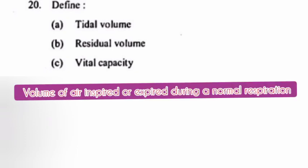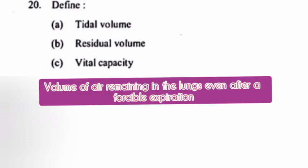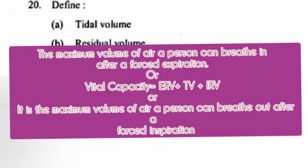Question 20. Define: A. Tidal volume. Answer: Volume of air inspired or expired during a normal respiration. B. Residual volume. Answer: The volume of air remaining in the lungs even after a forcible expiration. C. Vital capacity. Answer: The maximum volume of air a person can breathe in after a forced expiration. Vital capacity equals ERV plus TV plus IRV, or it is the maximum volume of air a person can breathe out after a forced inspiration.